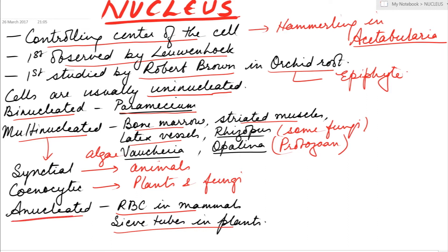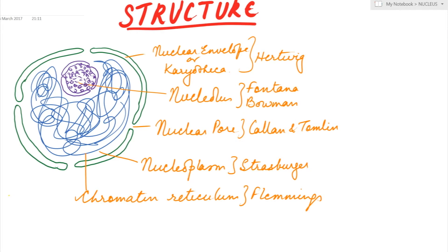Let's come to the structure of the nucleus. Outermost is the nuclear envelope discovered by Hartwig. Present on the nuclear envelope are nuclear pores discovered by Callan and Tomlin. Inner to the nuclear pore lies the nucleoplasm discovered by Strassberger. Present in the nucleoplasm is chromatin reticulum discovered by Fleming, and nucleolus discovered by Fontana with name given by Bowman.